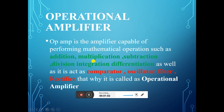Op-amp IC741 is called operational amplifier because it is capable of a lot of applications. It can perform mathematical operations such as addition, multiplication, subtraction, division, integration, and differentiation. The same IC can also act as a comparator, oscillator, filter, and rectifier. That's why it is called an operational amplifier.